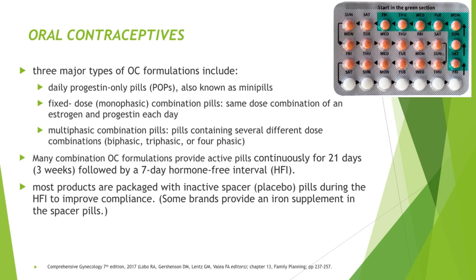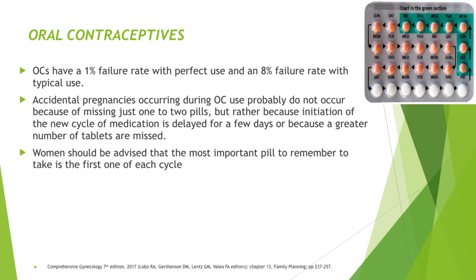Monophasic combination pills are most readily available in the market today. Many combination OC formulations provide active pills continuously for 21 days, followed by a 7-day hormone-free interval, with inactive spacer or placebo pills during the HFI to improve compliance. Oral contraceptives have a 1% failure rate with perfect use and an 8% failure rate with typical use. Accidental pregnancies during OC use probably occur because the initiation of a new cycle is delayed or because a greater number of tablets are missed. Women should be advised that the most important pill to remember is the first pill of each cycle.